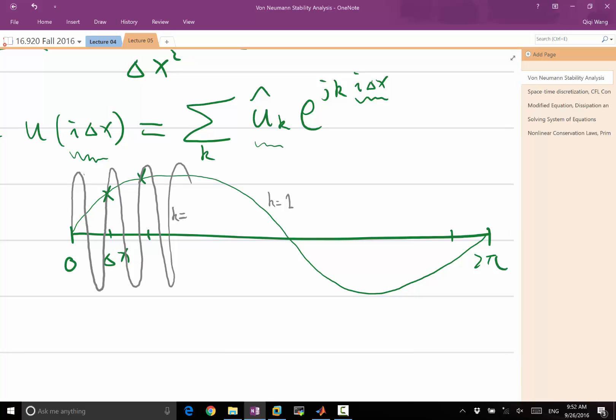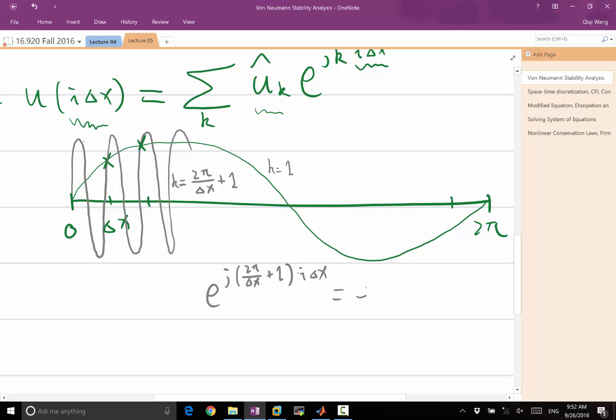That makes sure 2 pi over delta x plus one, right? So if you think of this, e to the j(2 pi/delta x + 1) times i delta x, I can expand it into j of 2 pi over delta x cancels with this. So I get 2 pi times i, delta x cancels, plus ji delta x, right?